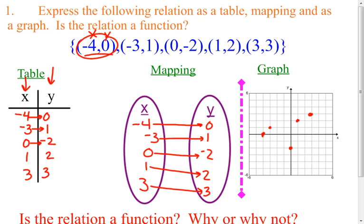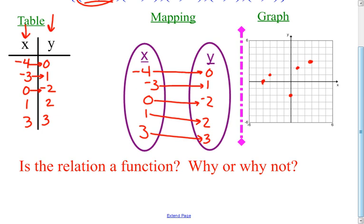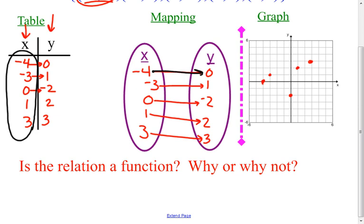We are going to determine if this relation is a function looking at all three ways. From the perspective of a table, as long as you have all different x's, it is automatically going to be a function — and mine are all different. From the mapping standpoint, you want to make sure that none of the arrows have two arrows leading from one x to two different y's. Because each arrow leads out of one x and goes to exactly one y, it is a function.